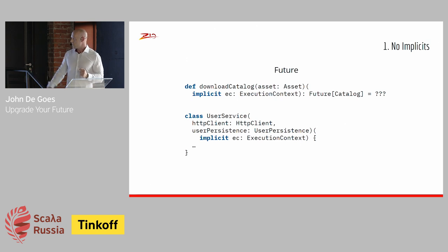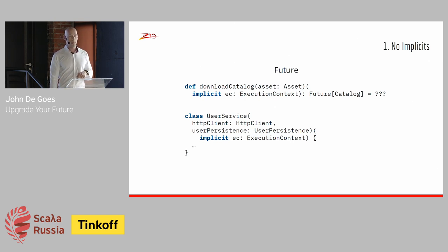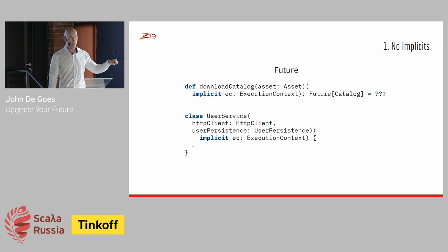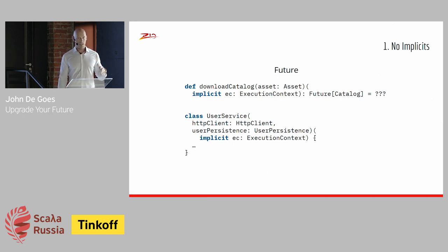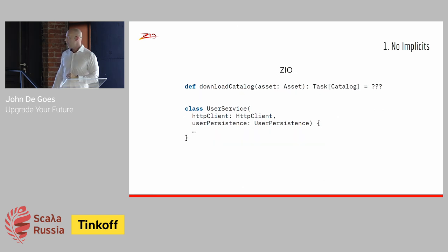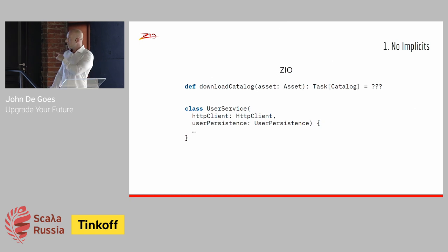ZIO has no implicits. In Future-based code it's very common to see an implicit execution context threaded through the entire program. Best practice says you shouldn't import the global execution context because it takes away control from the caller. So ideally you thread execution context through your entire program — but that is a lot of pain, a lot of typing, a lot of boilerplate. With ZIO there is no execution context, no implicit parameter, no threading of information through your whole program. You just write ordinary code.